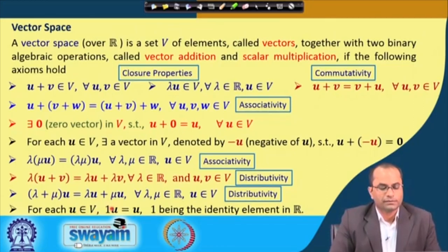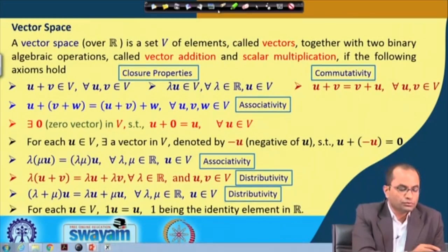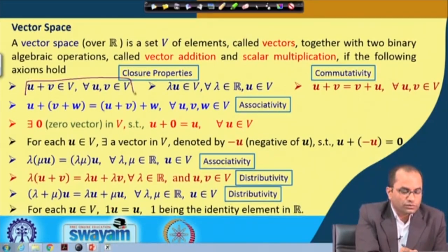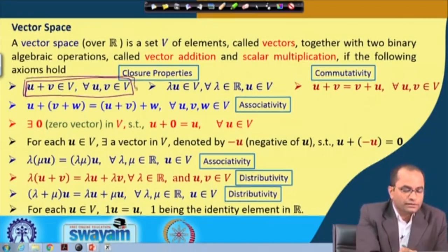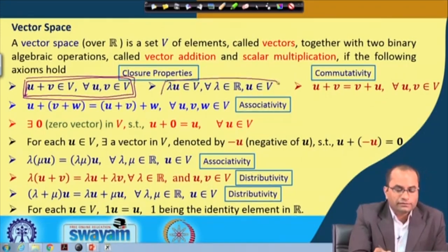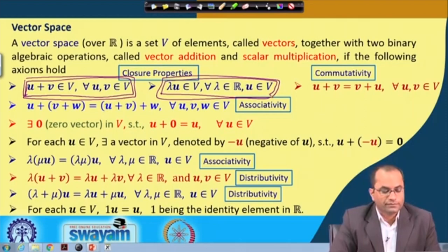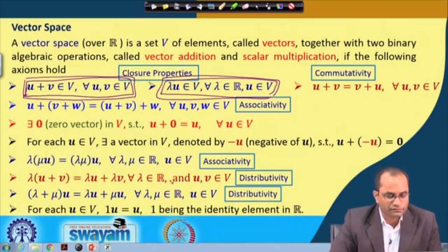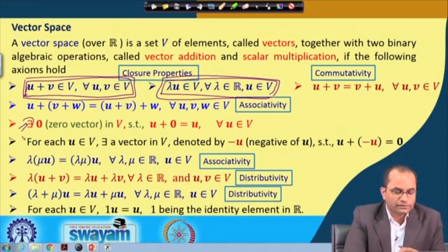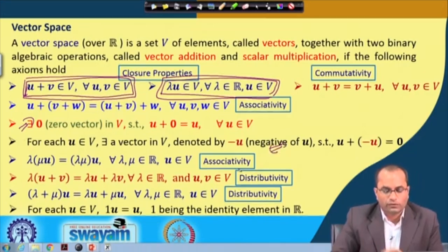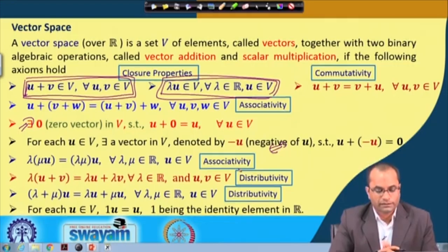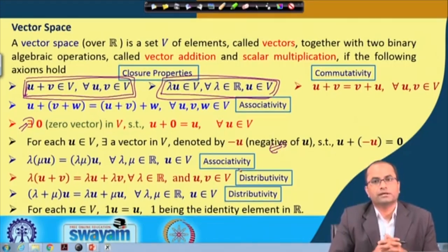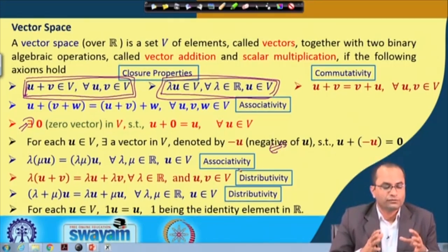We have so many properties, but the two closure properties are most important: U + V must be in the set V, and lambda·U must be in the set V, for all U and for all lambda from R. Together with the other properties — existence of the zero vector, additive inverses, distributive property, associativity — these must all hold for the set V to be called a vector space.